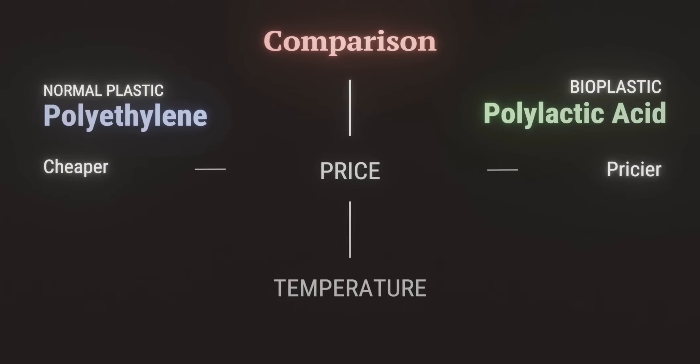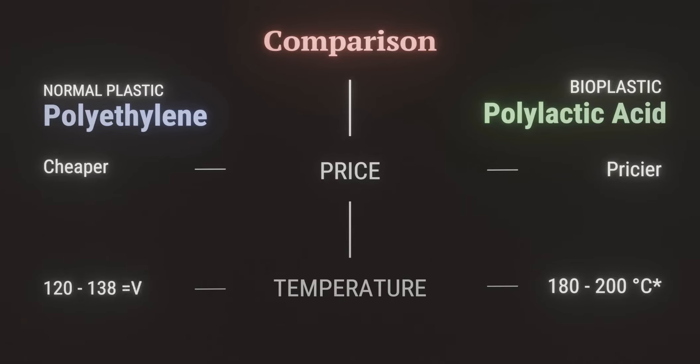Bioplastic tends to be more expensive than conventional plastic. In terms of temperature — how much heat can both withstand before breaking down? — polylactic acid stands up to 180 to 200 degrees, depending on the other materials it is mixed with, while polyethylene can withstand only 120 to 130 degrees.